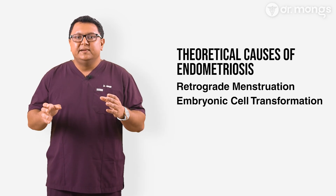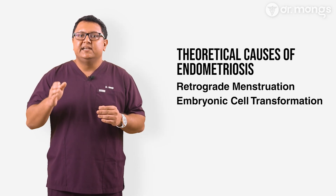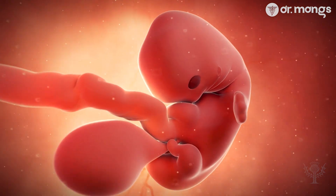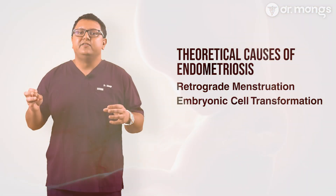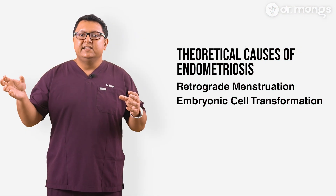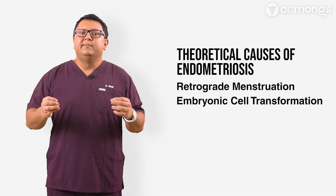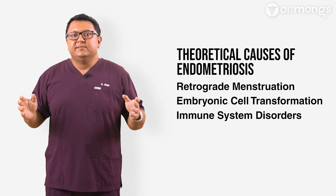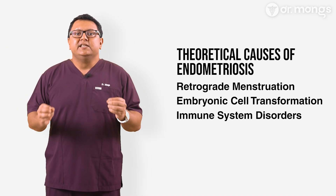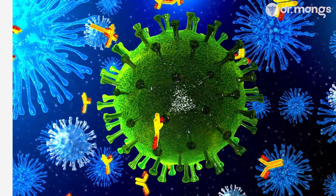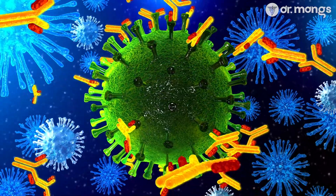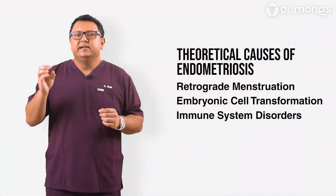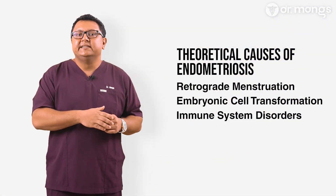Embryonic cell transformation theory suggests that during development in the womb, certain cells destined to become endometriosis tissues end up outside the uterus and develop into endometriosis later on as one ages. Immune system disorders is another theory — it's possible that the immune system may fail to recognize and destroy endometriosis tissue, but this theory still needs more solid supporting data.